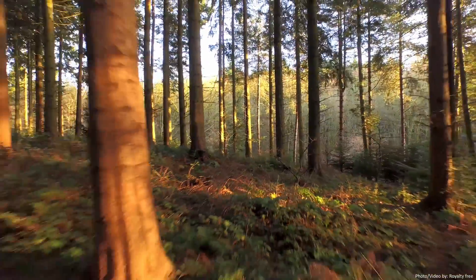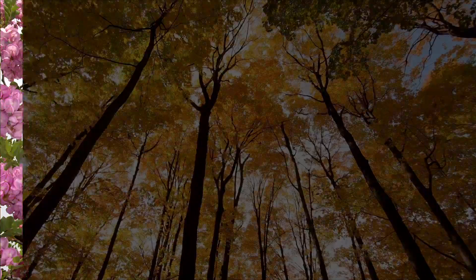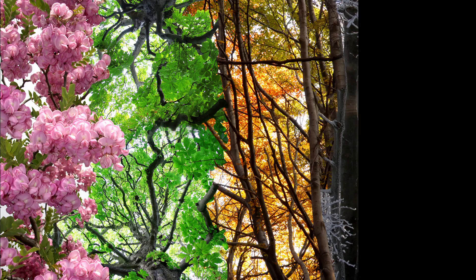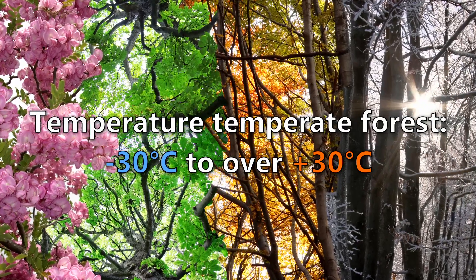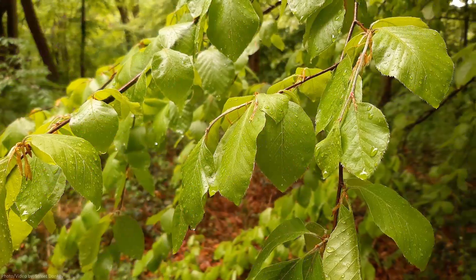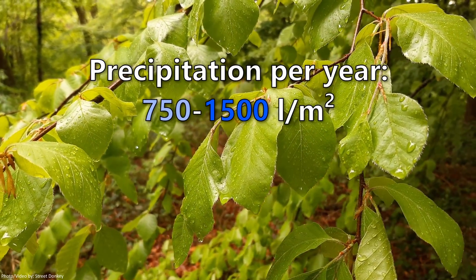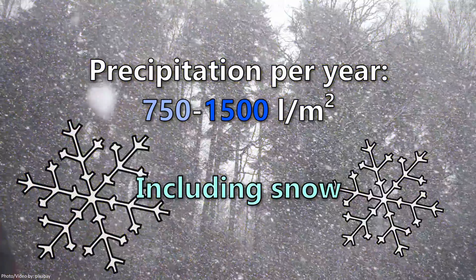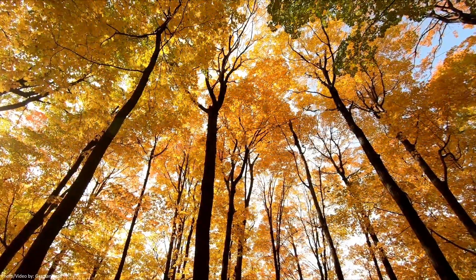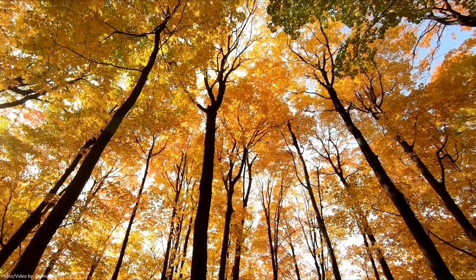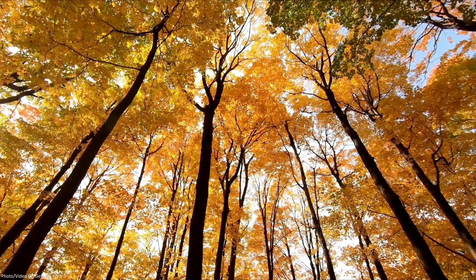Generally, all temperate forests experience four different well-defined seasons — spring, summer, fall and winter — with temperatures ranging from minus 30 degrees Celsius to over 30 degrees Celsius. The precipitation all year long ranges from about 750 to 1500 liters per square meter over one year, including snow in the winter. For that reason, most of the trees living in temperate forests are deciduous, so they shed their leaves in the fall before the cold temperatures in the winter arrive.